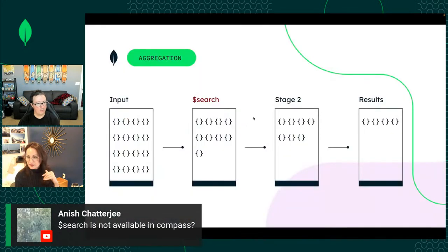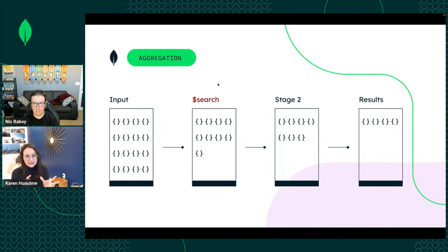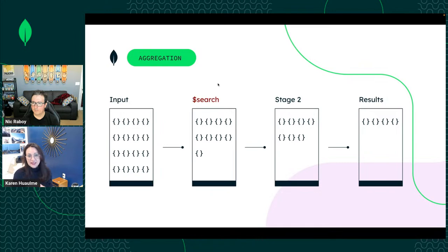If you're using Compass and search isn't available, make sure you have your index created and that search is the first stage. An aggregation in MongoDB takes all your documents — for us the movies collection — and goes through different transformations at every stage, changing the data. The results of each stage go into the next. It's a great tool for cleaning data, making other collections, and unlocking search and time series workloads.